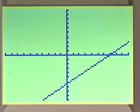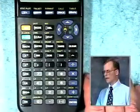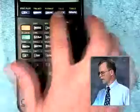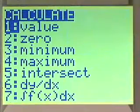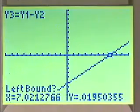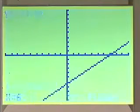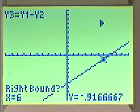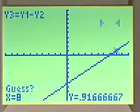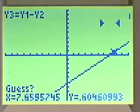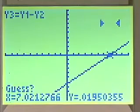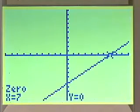Now to find the coordinates of that point, we'll use 2nd calc 2, zero. Our left bound can be 6, or we can use our calculator arrow keys. Our right bound could be 8, or we could use our arrow keys again. Then we get as close as we can, hit enter, and we see that our solution is (7, 0), checking our equation.